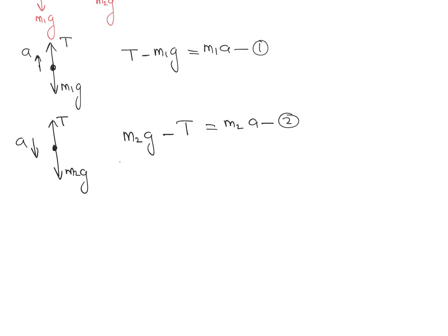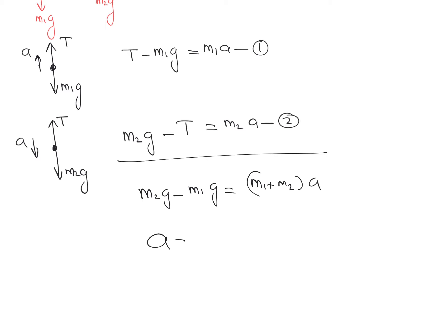To find acceleration, we add the two equations. Adding equation one and equation two, T and minus T cancel out, giving us: m2g minus m1g equals (m1 plus m2) times a. Therefore, the value of acceleration a equals (m2 minus m1) times g divided by (m1 plus m2).